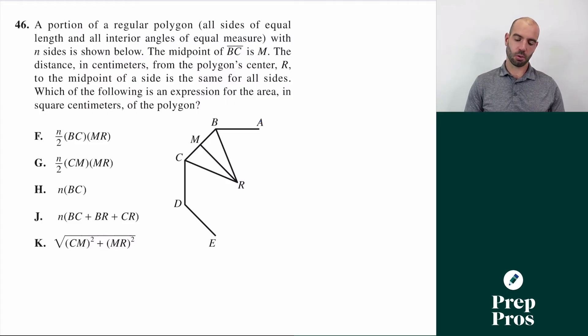Here it says a portion of the regular polygon, all sides of equal length and all interior angles of equal measure, with N sides as shown below. The midpoint of BC is M, with the distance from the polygon center R to the midpoint the same as all sides, and then it says we're trying to find the area of this whole thing.